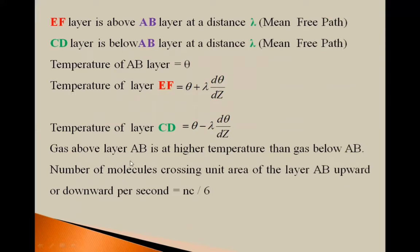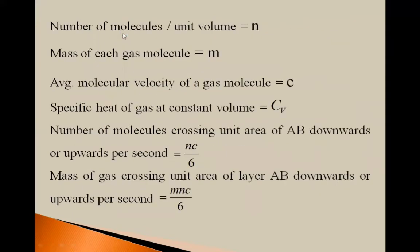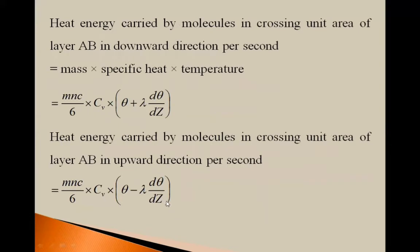Gas above layer AB is at higher temperature than gas below AB. The number of molecules crossing unit area of layer AB upward or downward per second is nc/6. The mass of gas crossing unit area of layer AB downward or upward per second is also given by nc/6.